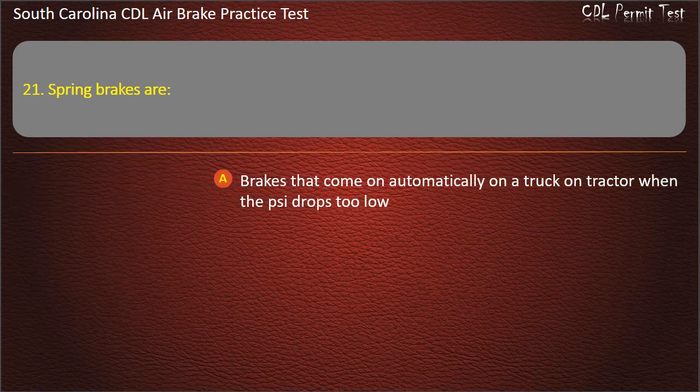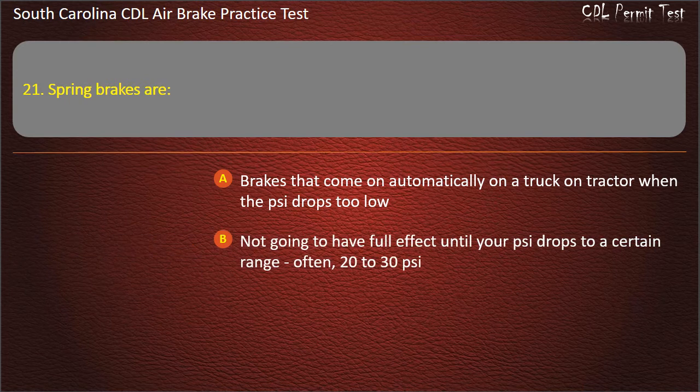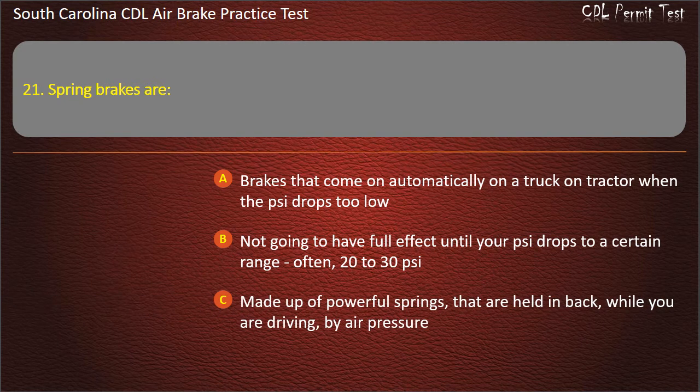Question 21: Spring brakes are — brakes that come on automatically on a truck or tractor when the air pressure drops too low; not going to have full effect until your air pressure drops to a certain range, often 20 to 30 pounds per square inch; made up of powerful springs that are held back while you are driving by air pressure; or all of the above. Answer: All of the above.